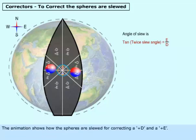The animation shows how the spheres are slewed for correcting a positive D and a positive E.